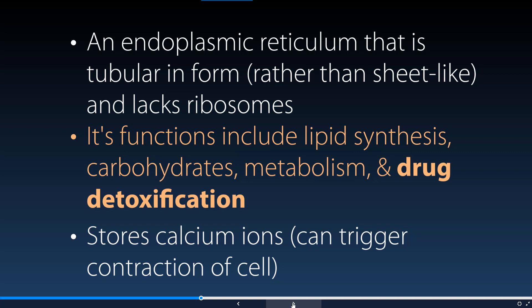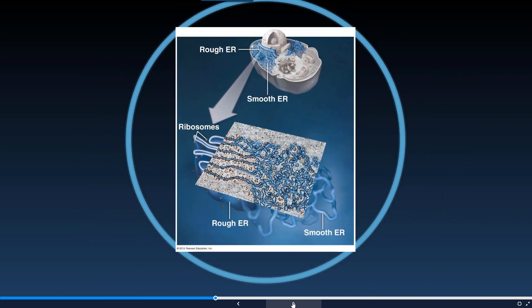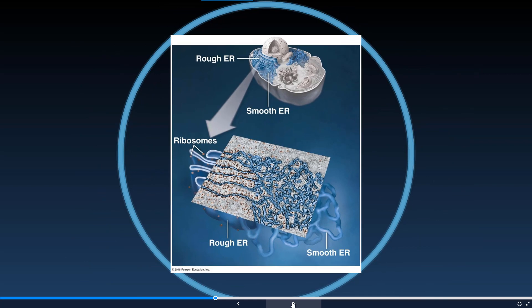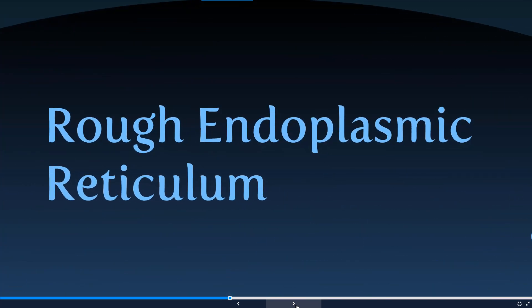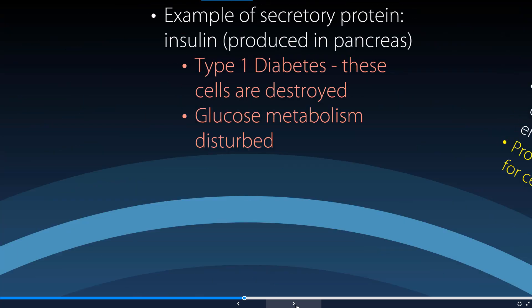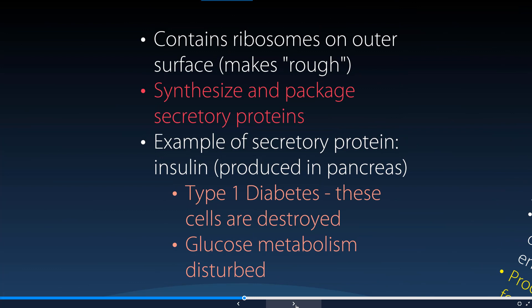The smooth endoplasmic reticulum is also a repository for calcium ions, which is useful for the cell to control contractions. Looking at figures under the electron microscope, we can see its tubular form is quite different from the sheet-like rough endoplasmic reticulum. In rough endoplasmic reticulum, we find a slightly different function and structure — it contains ribosomes along the outer surface, which is why it's called rough.